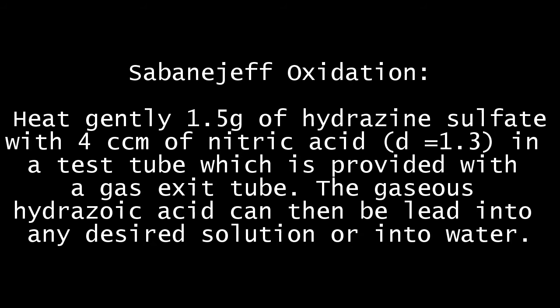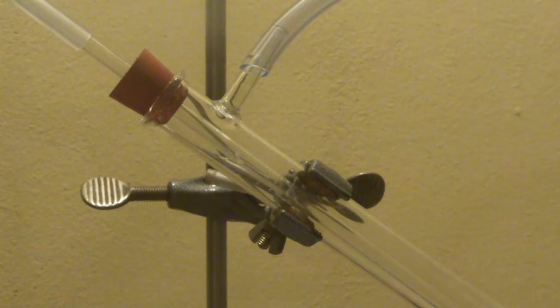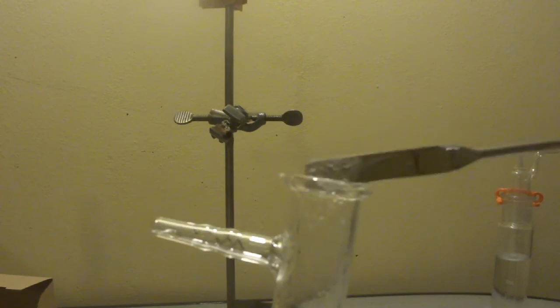Here is the setup we are going to use. A test tube, equipped with a wide gas exit tube is used to generate the hydrozoic acid. The latter is then passed into the silver nitrate solution in a second test tube. Start by dissolving 0.7 grams of silver nitrate in a few cubic centimeters of water in a test tube and add a small amount of dextrin.